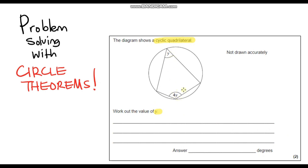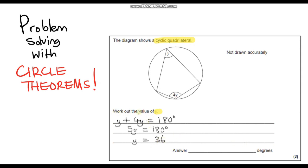So we can write an expression for the sum of these two angles: y plus 4y equals 180 degrees. We know they have to add up to 180 degrees, and now we can just solve this equation. y plus 4y gives us 5y equals 180 degrees, therefore y equals 180 divided by 5. 5 into 180 goes exactly 36 times, so y equals 36 degrees.